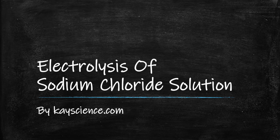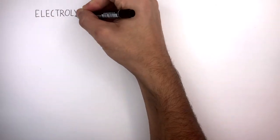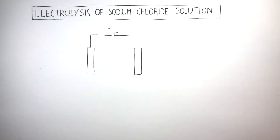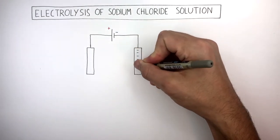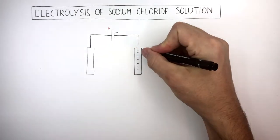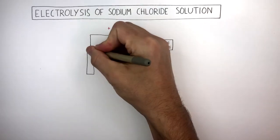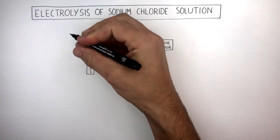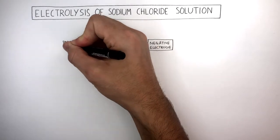Electrolysis of sodium chloride solution by kscience.com. The electrolysis of sodium chloride solution uses a cell or power pack. Connected to the power pack are two electrodes — here the negative electrode and here the positive electrode.